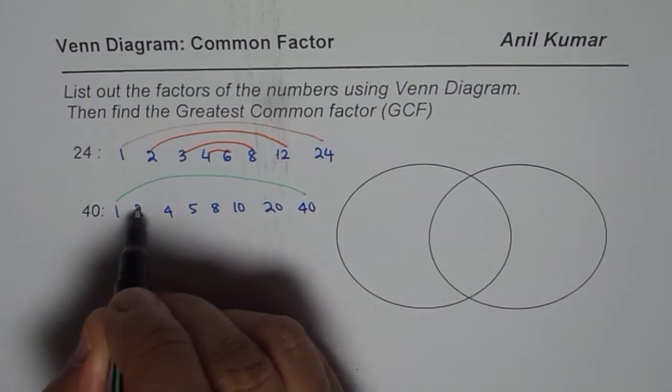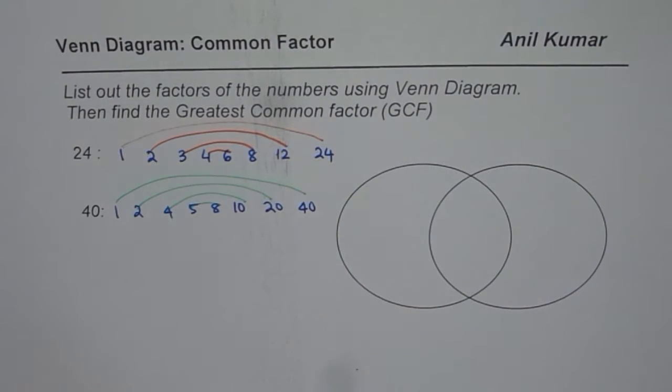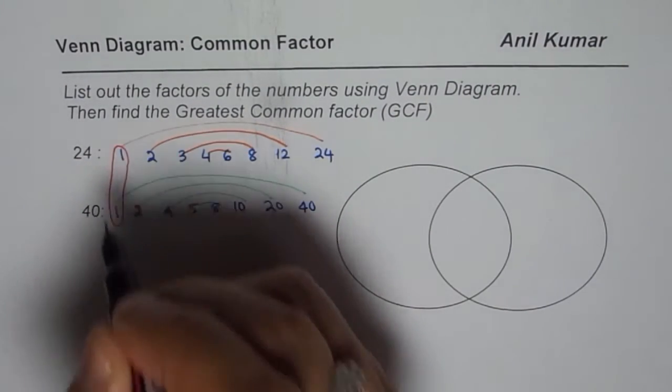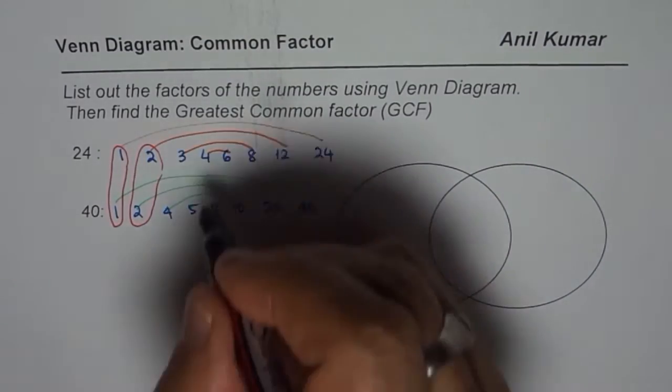1, 2, 4, 5, 8, 10, 20, 40. Now out of these factors which are common? So what we find here is that we have 1, always will be a common factor. Then we have 2 as common, right. What else? 4 is common.